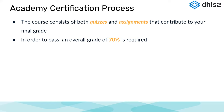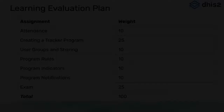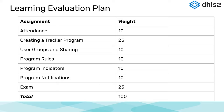This course consists of both quizzes and assignments that contribute to your final grade. In order to pass, you need an overall grade of 70%. This is broken down as follows: attendance is worth 10%, the assignment on creating a tracker program is worth 25%, and then there are assignments on user groups and sharing, program rules, program indicators, and program notifications — those are all valued at 10% of your final grade each. The exam is worth 25%.